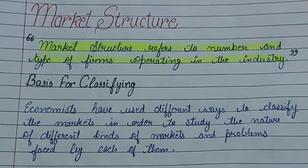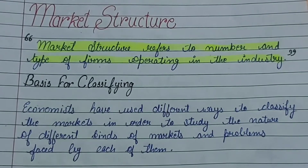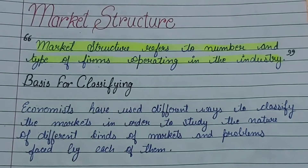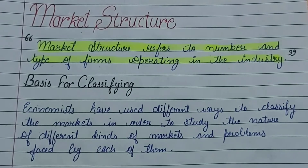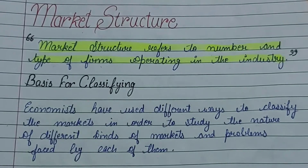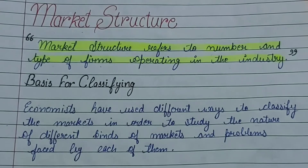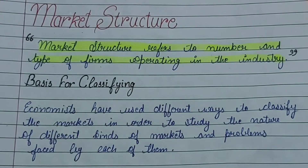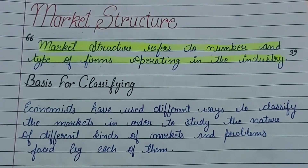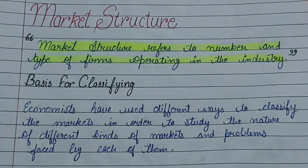Hello everyone, welcome to my channel. Today we are going to do the topic market structure. Market structure refers to the number and type of firms operating in an industry. Market structure का मतलब होता है कि कितनी और किस तरह की firms एक industry में operate कर रही हैं। Market structure के basis पर हम markets को classify करते हैं।